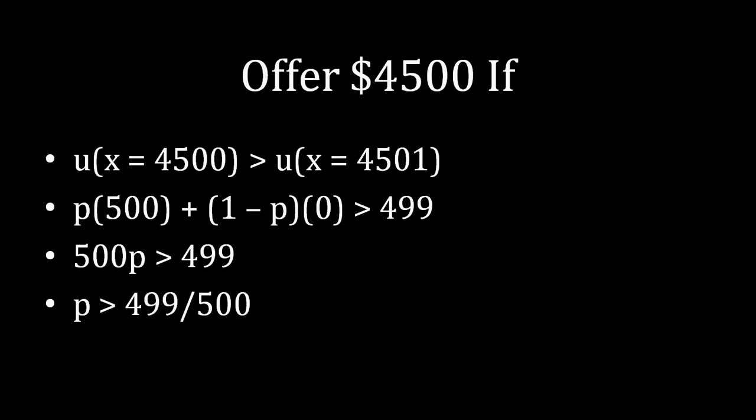We're looking at the utility for offering $4,500 on the left and the utility for offering $4,501 on the right. So what is Albert's payoff or utility, that's that u function there, for offering $4,500? Well, with probability p under these circumstances, Barbara is accepting, which means the purchase goes through, and Albert reaps $500 in profit. With remaining probability, Barbara is rejecting. With probability 1-p, Barbara is rejecting, and Albert ends up with no deal whatsoever, so he receives no profit.